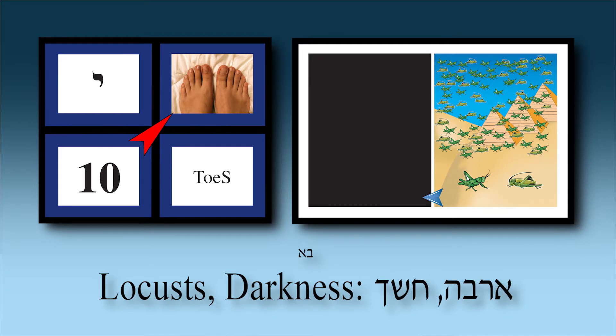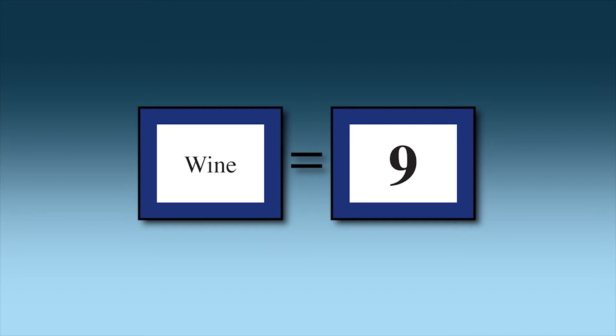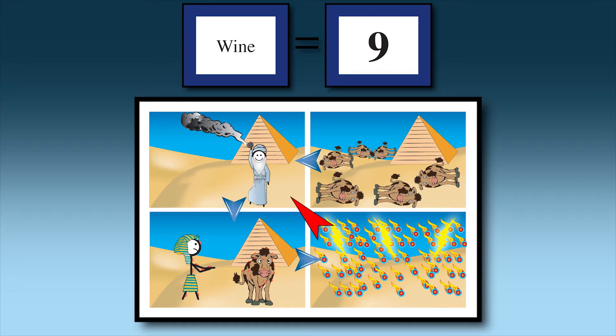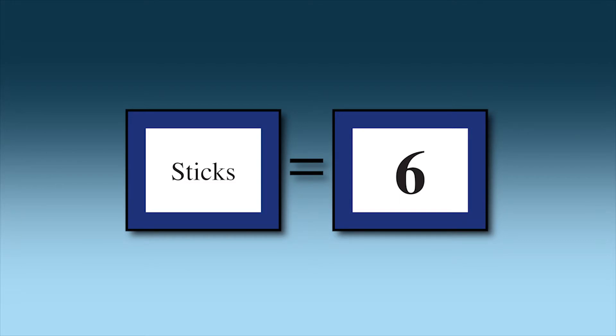Chapter ten toes: the Arbeh — giant locusts — coming and gouging out the eyes of the Egyptians, and the Egyptians banging their toes into the walls because they were blinded. So it's Makkah Arbeh and Choshech. You drop the simon eventually and just remember: this information is in this Perek. You can go back and forth — 'What's in nine?' — and you'd say three Makkot: Dever, Sh'chin, Barad. 'What's in five Hey?' — go get the hay yourselves. Keep reviewing in both directions.